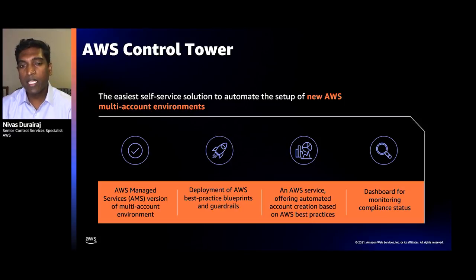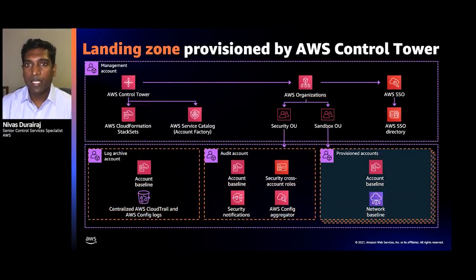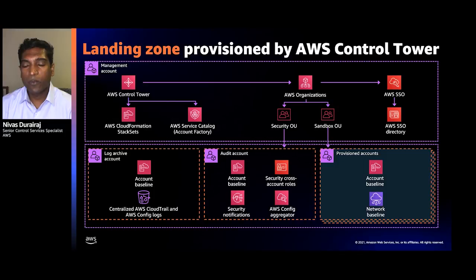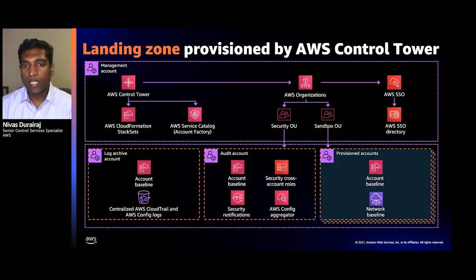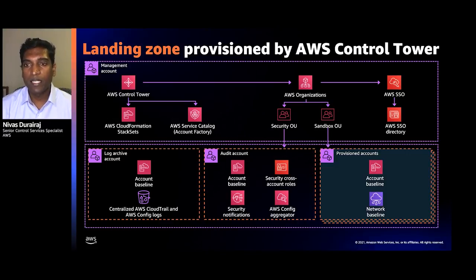Control Tower provides a dashboard where IT central administrators can monitor and view the compliance state of accounts across the entire organization. It gives you an orchestration of multiple AWS services including Organizations, SSO, Service Catalog, Config, and CloudTrail. With this, you receive two new accounts — a log archive and a security account — both underneath the security organizational unit. You also have the option to create a sandbox OU or any OU you choose.